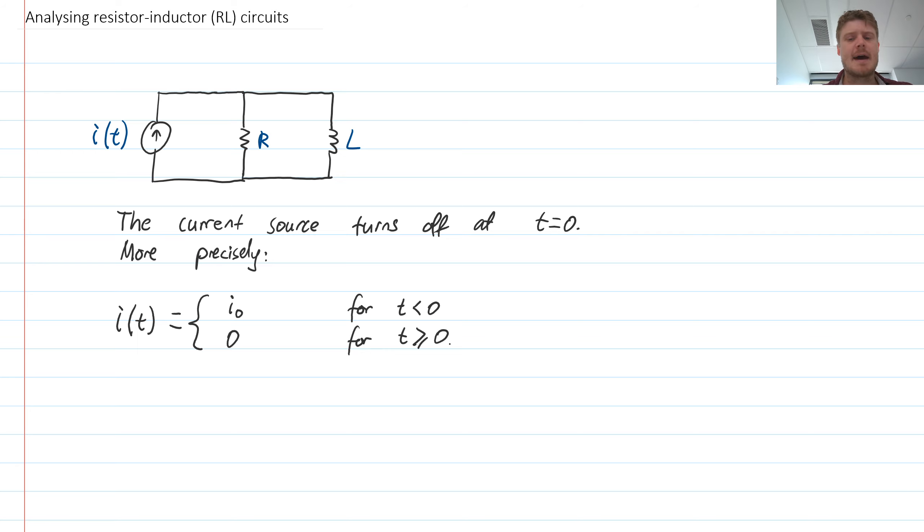And so we would like to analyze this circuit. So we need to do this in two steps. Basically because we have a change in current, we need to analyze the initial condition for what that current is doing and then we need to analyze the behavior when it changes.